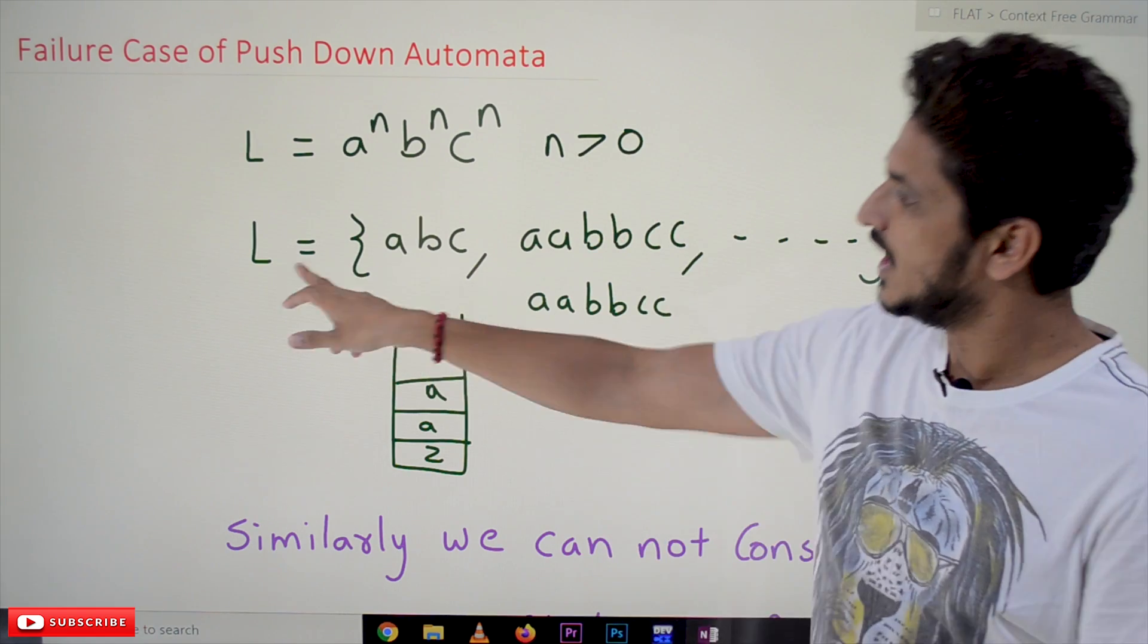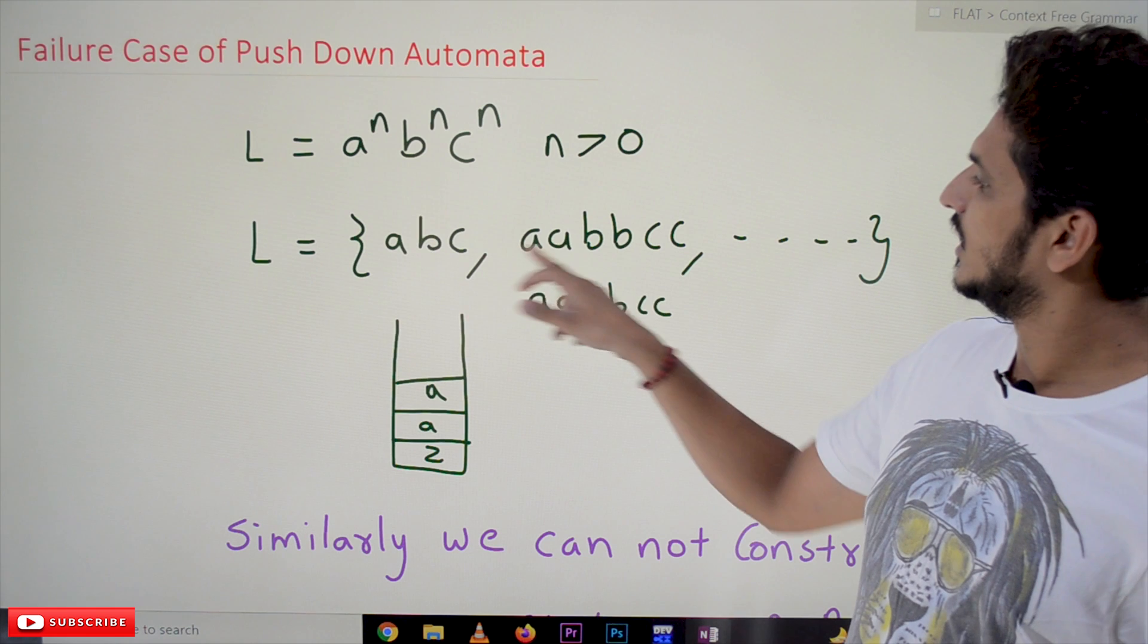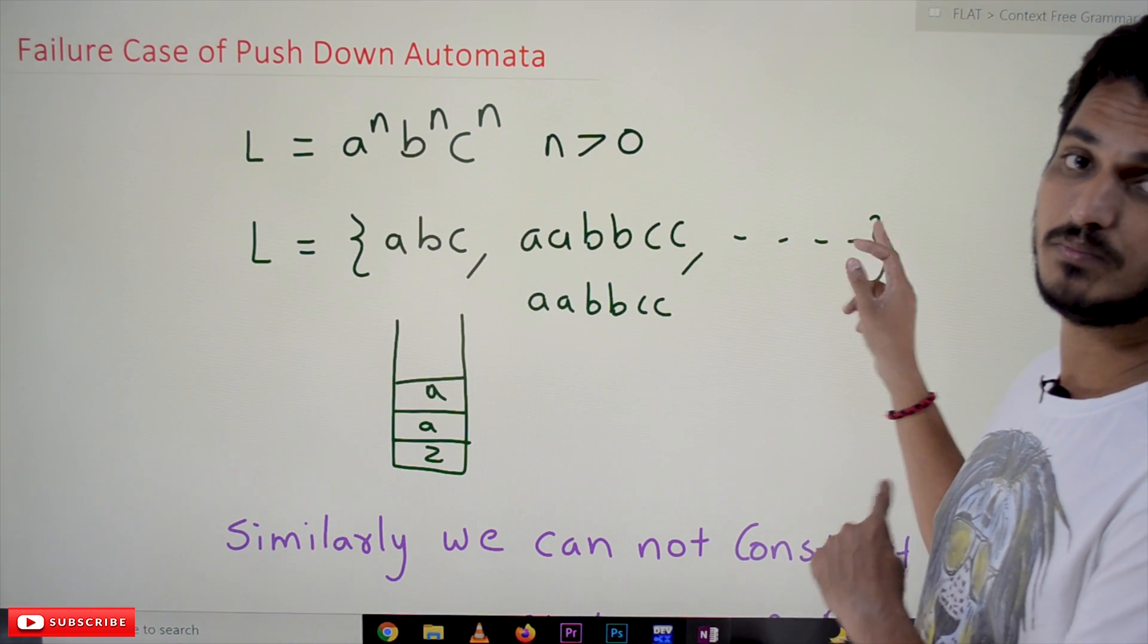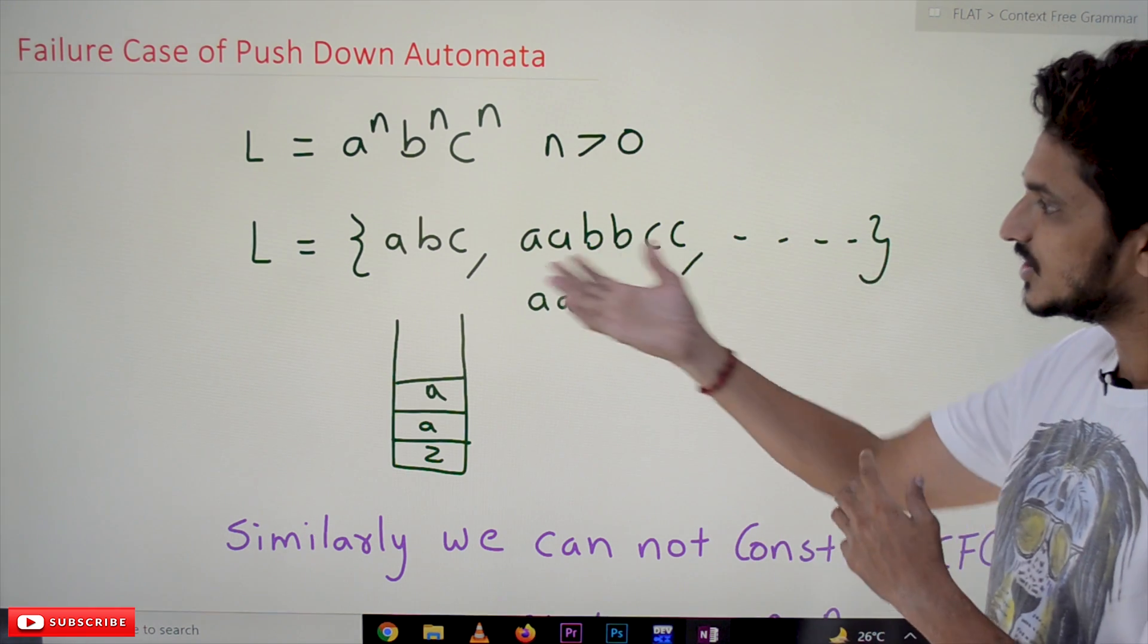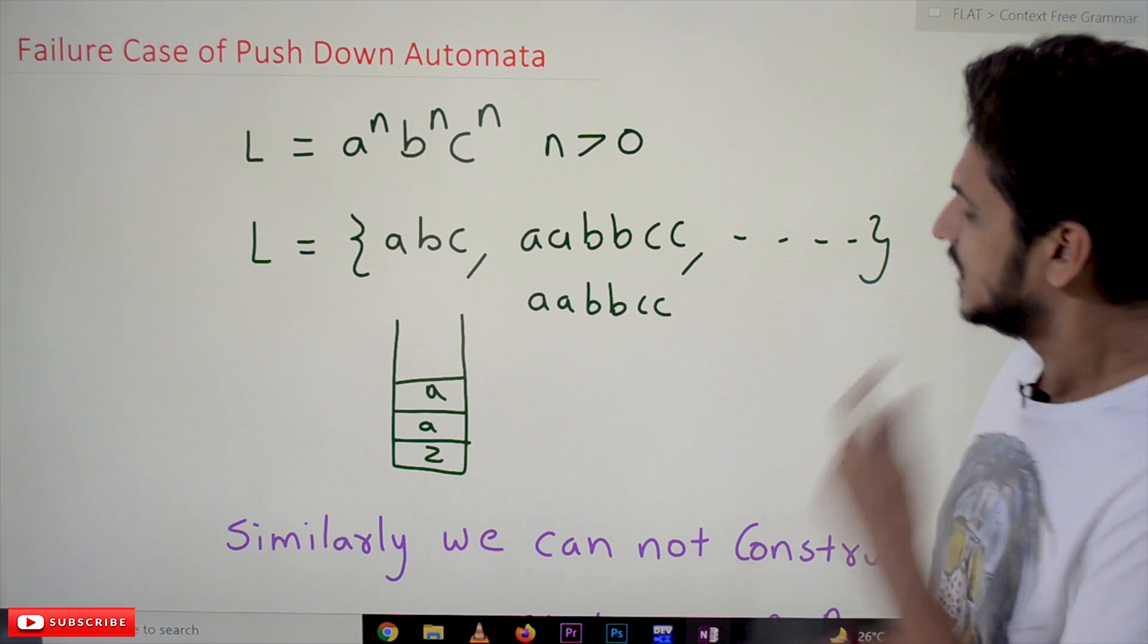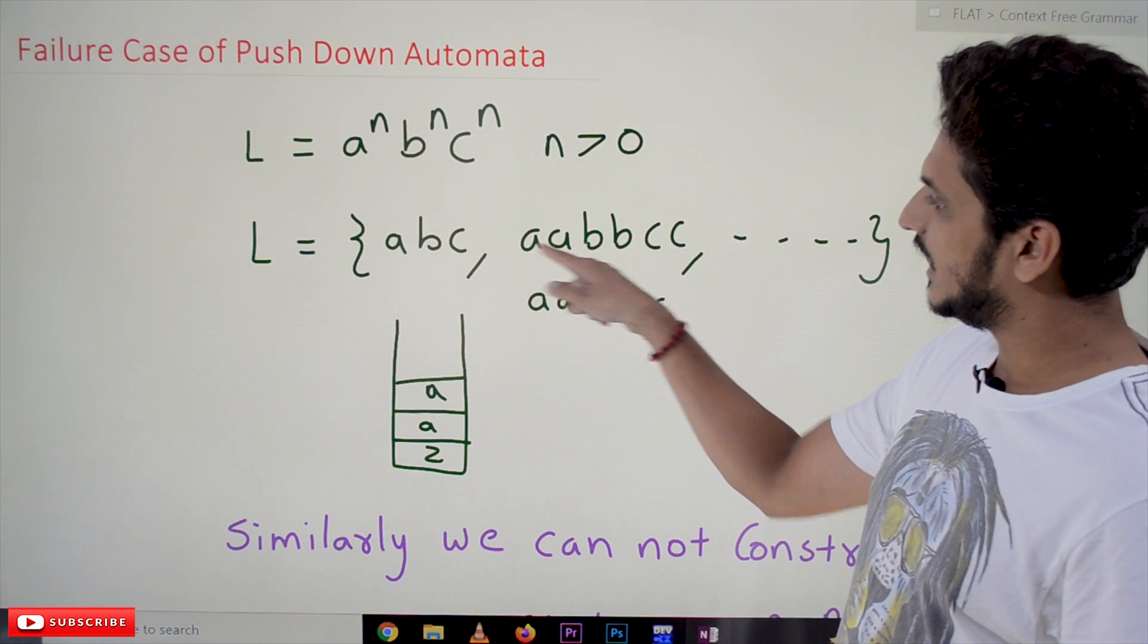What are the strings that are present in this language? L equals abc, aabbcc, aaabbbccc. These are the strings present in this language. So what's this language? A is followed by equal number of b's followed by equal number of c's.